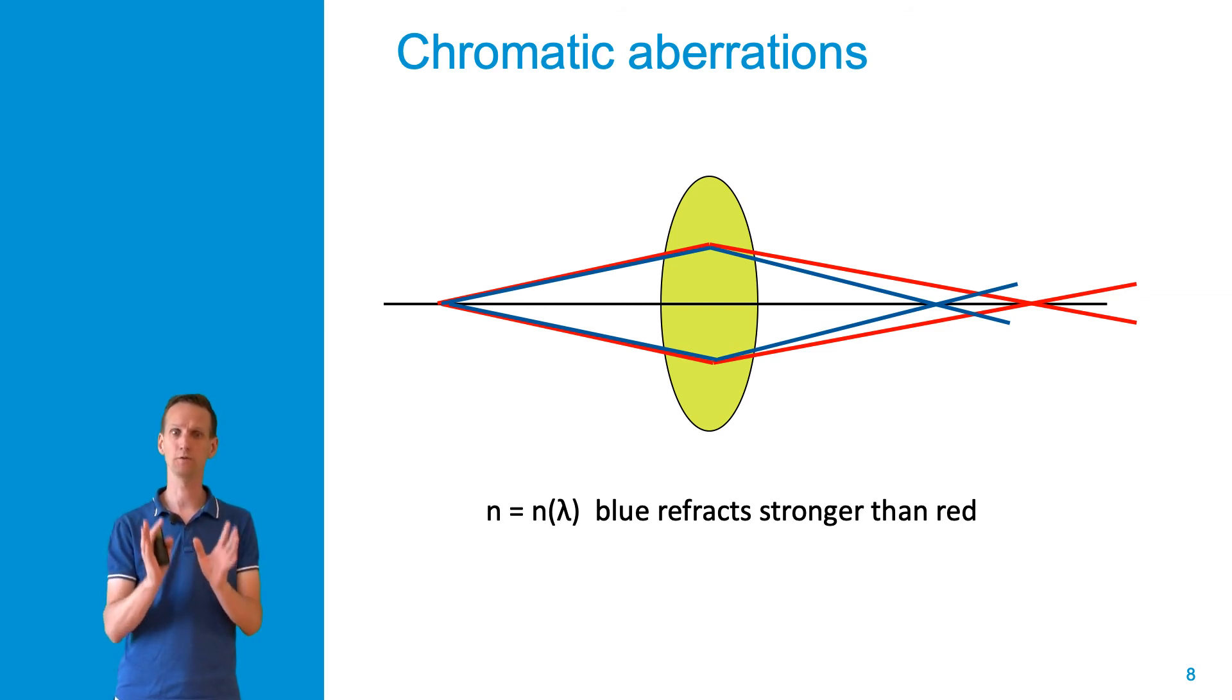Chromatic aberrations arise for light by the fact that the refractive index is different for different wavelengths of light. Typically, blue light refracts stronger than red light, and you see that depicted in the scheme here. This means that the focal point for the blue light is at a different position than that for the red light.